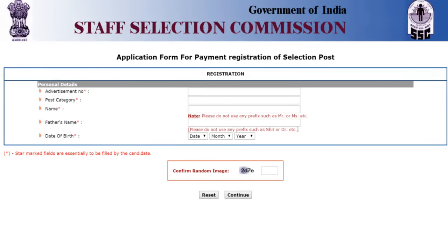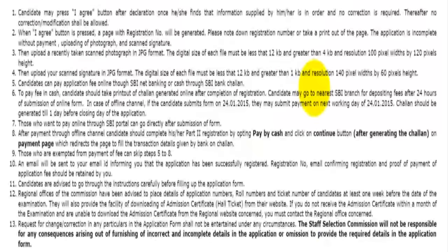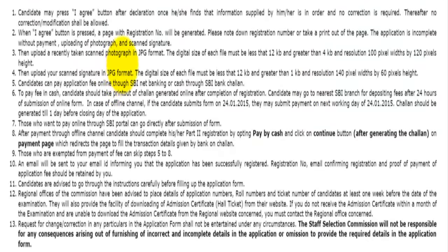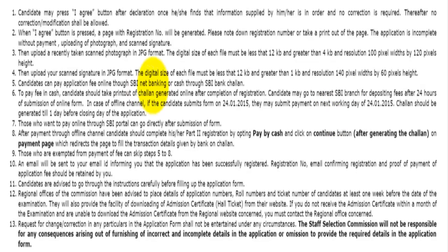After giving this information, you have to go to the Part 2 registration. In Part 2 registration, you have to upload your photograph, upload your scanned signature, and then pay the fees. The photograph should be in JPG format. The size of the photograph and signature is given in the guidelines. You can pay your fees through SBI Net Banking or by cash through SBI Bank Chalan. After that, a payment slip will be generated, which you can keep along with your registration number and the email confirming registration and proof of payment of the application fee.